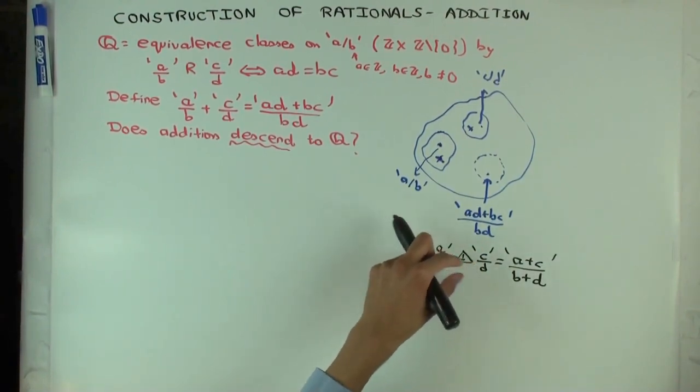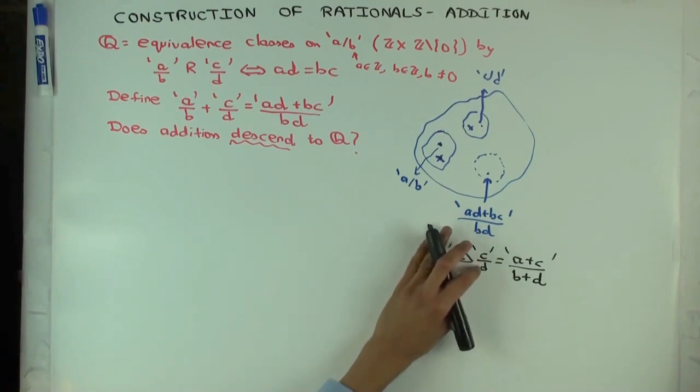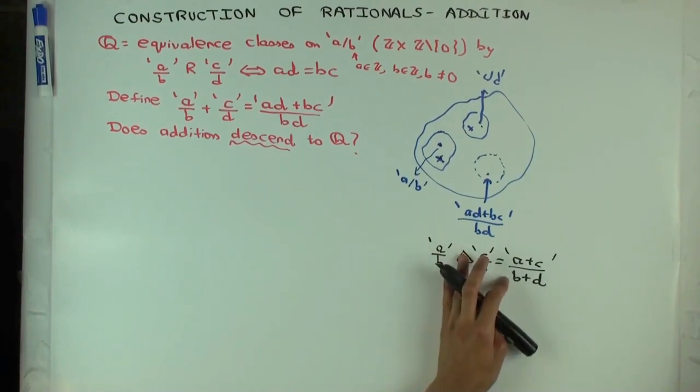But I could, if I change this a over b to another fraction which is equal to it as a rational number, and I do something here, and then I look at the sum, the new answer may not be equivalent to this answer as a rational number. Do you see that?